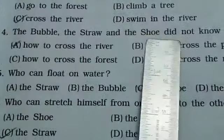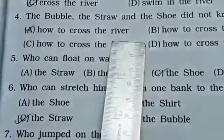Fourth. The bubble, the straw and the shoe did not know A. How to cross the river, B. How to cross the pond, C. How to cross the forest, D. How to cross the road. Correct answer is A, how to cross the river.